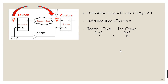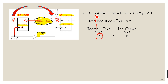Let us solve a numerical example. We have a launch flip-flop with clock-to-Q delay of 5 ns, a capture flip-flop with hold time of 3 ns, combinational logic delay of 2 ns, and a clock skew of 7 ns. The data arrival time is 0 + 5 + 2 = 7 ns. The data required time is 7 + 3 = 10 ns. Since DAT (7 ns) is less than DRT (10 ns), this is a hold violation.